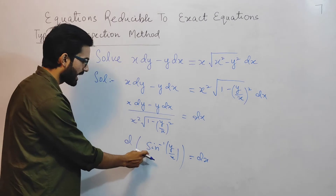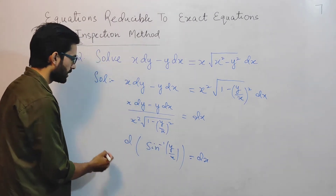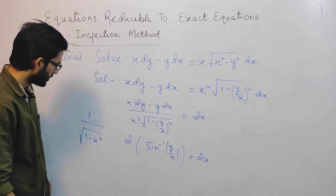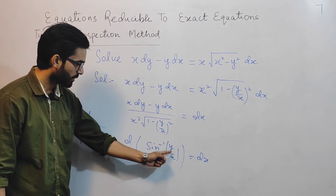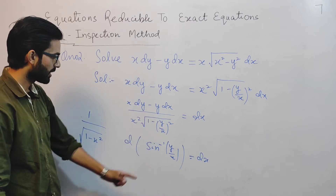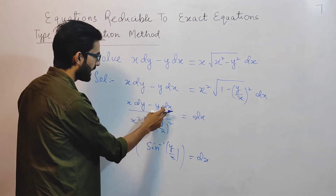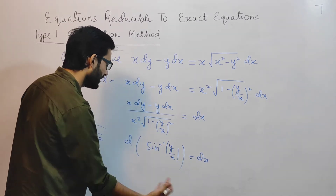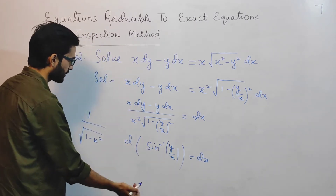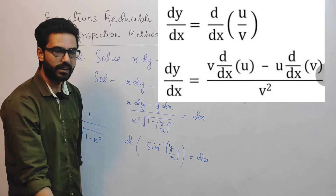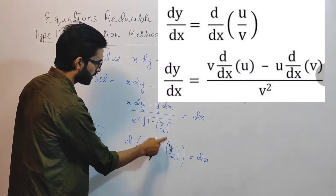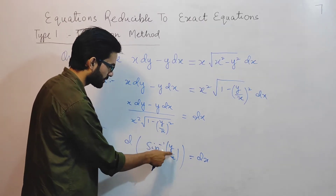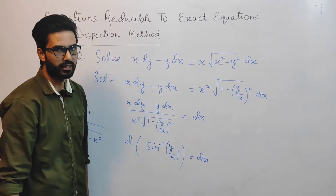Now you will ask how this comes. When we differentiate sin⁻¹(y/x), it equals 1 divided by the square root of 1 minus x², where x here is y/x. So I have written sin⁻¹(y/x). What happens here is: x dy minus y dx over x² — when we differentiate y/x using the division property, it is denominator times differentiation of numerator, minus numerator times differentiation of denominator, divided by denominator squared, which is x². So the differentiation of sin⁻¹(y/x) matches exactly.